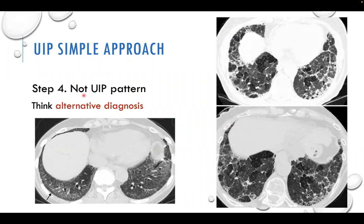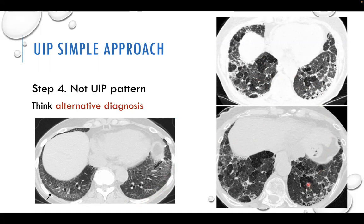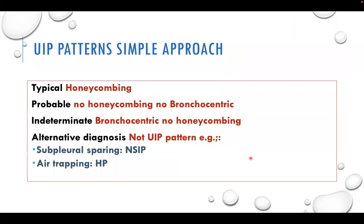Step four — non-UIP pattern or alternative diagnosis: if subpleural sparing is found, this is directly NSIP — no differential diagnosis needed; this is the alternative diagnosis. If widespread air trapping involving more than three lobes including the upper lobe is present, this is hypersensitivity pneumonitis. Summary: typical = honeycombing; probable = no honeycombing, no bronchocentricity; indeterminate = bronchocentricity, no honeycombing; alternative diagnosis = non-UIP pattern, e.g., subpleural sparing for NSIP or air trapping for HP.